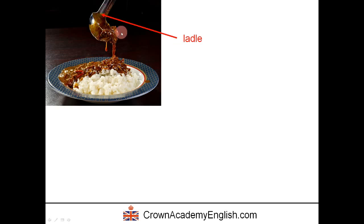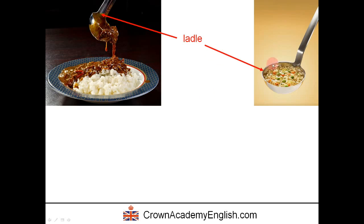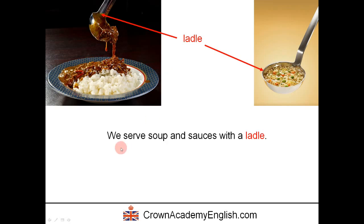This metal object is called a ladle — it's a flat and deep spoon. Here is another photograph of a ladle: this one contains some minestrone soup and this one contains a sauce that looks like chicken curry. We serve soup and sauces with a ladle.